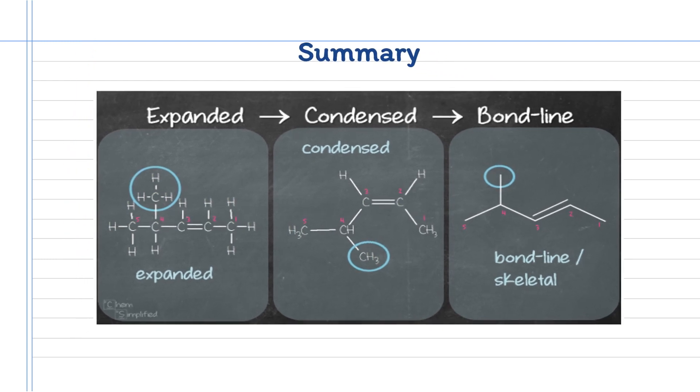The three types of structural formula are summarized as you can see. Skeletal structural formulas are usually written for cyclic and complex compounds and when the focus is on the functional group. Its advantage is that it can be drawn quickly.